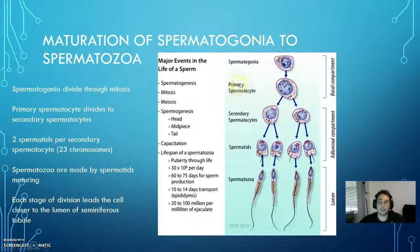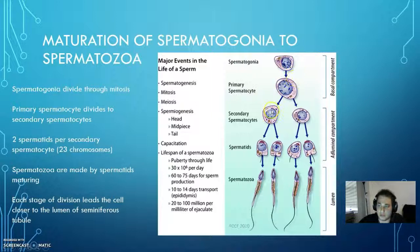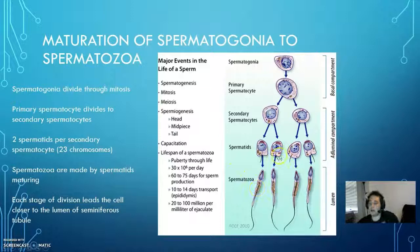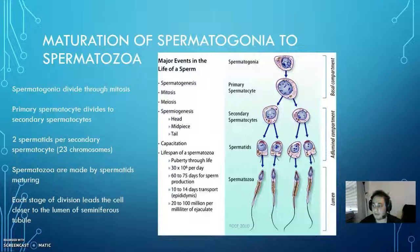The primary spermatocytes are going to divide through meiosis and they're going to be different from each other. Those primary spermatocytes are then going to divide into secondary spermatocytes, which then creates spermatids. These spermatids are then going to create spermatozoa, and spermatozoa is going to be the final product — the sperm cell that will actually travel through the vas deferens and be what's ejaculated after it combines with seminal fluids.